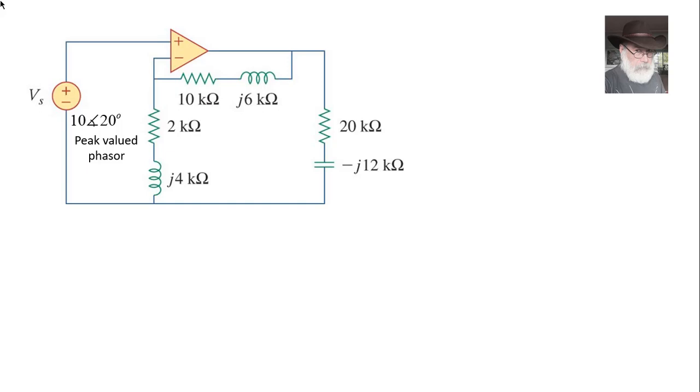This is the question. That circuit is energized by that sinusoidal source on the left, represented by peak-valued phasor. That means that whatever power I compute will have to be divided by two. Before I continue, I will choose this node at the bottom as my reference, as my zero volts node. The question is asking, what is the average power at this 20 kilo ohm resistor?